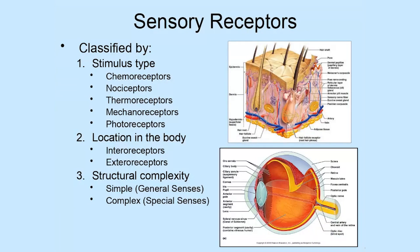Before we get into the senses in more detail, I want to spend a little time talking about the receptors located throughout the body that allow us to detect changes both outside and inside of our body, and talk about how these receptors are classified — because you're going to be hearing these terms quite a lot as you work through the activities and assignments. There are three different ways we can classify sensory receptors, the first and most common being by the type of stimulus they are most responsive to. There are five categories within that.